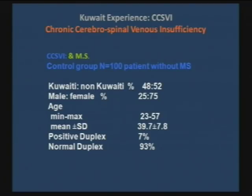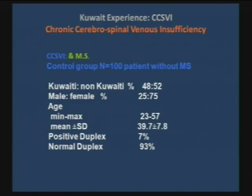Interestingly, out of the 7% that had a positive duplex, all of them had measurements just below the cutoff line — none of them had severe stenosis; they just barely met the criteria. Looking at the history of one of the patients, we found that her brother had MS, so she was worried. We did an MRI of the brain, and found periventricular lesions — which is not a diagnosis of MS, but maybe a pre-MS diagnosis as was described earlier. Perhaps if we follow these patients up over time, we will find that they will develop MS later.